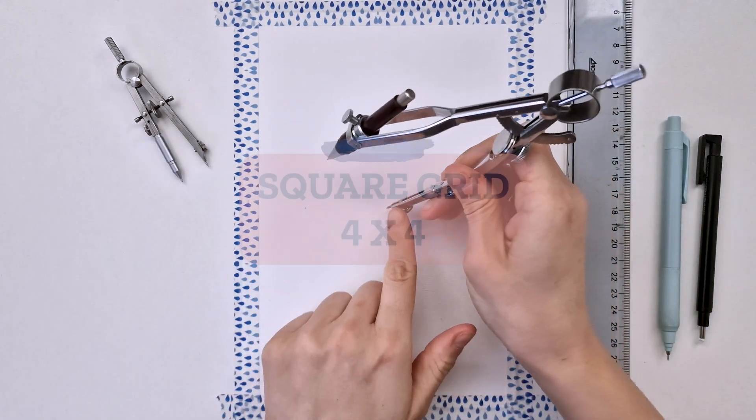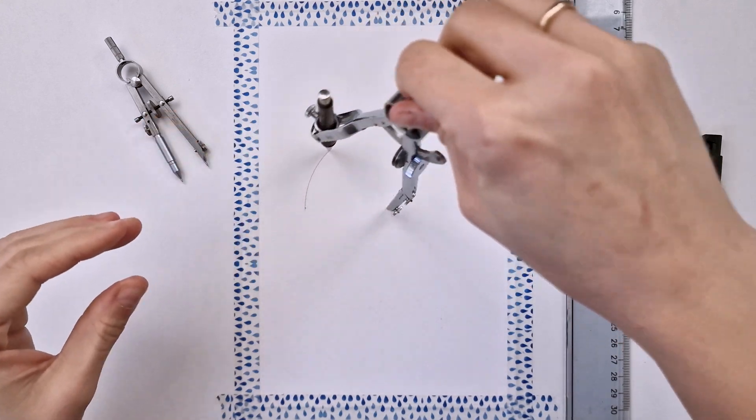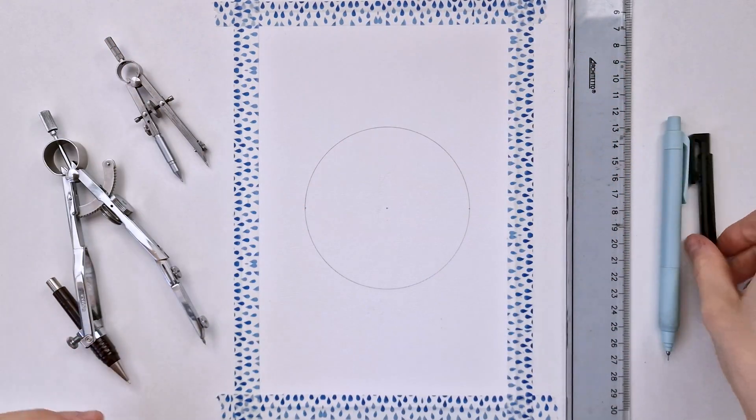Hello everyone, today we're gonna learn how to create the square grid 4 times 4 or 4 per 4 and even 8 per 8 if you stay until the end.